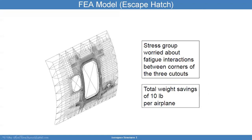Here is an example of a finite element model of the escape hatch. It used to be a very coarse mesh, but the stretch group was worried about fatigue, and so they went in and actually refined the mesh in the area of concern, and then ran a subscale model of this to increase confidence in that fuselage section.